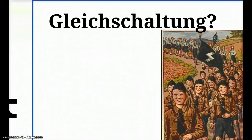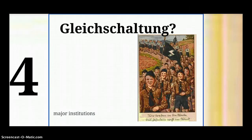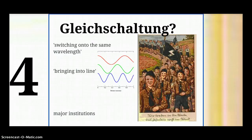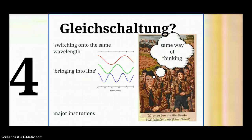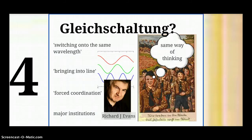What was Gleichschaltung? It literally translates as switching onto the same wavelength, or bringing into line. Basically, it involves trying to get everyone throughout Germany into the same way of thinking — a Nazi way of thinking in terms of opinions and belief system. The historian Richard J. Evans translates it as forced coordination: bringing people into line with Nazi beliefs, from individuals to the major institutions which would influence people's opinions, beliefs, and way of life.